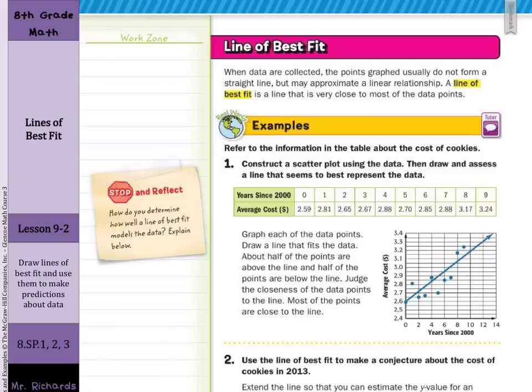About half the points are above the line, and half the points are below the line. Then you want to judge the closeness of the data points to the line. Most of the points are close to the line.